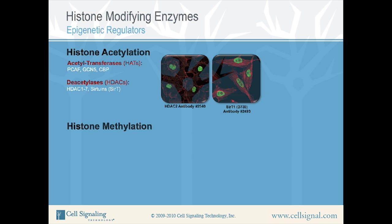Histone methylation is a major determinant for the formation of active and inactive regions of the genome, and is crucial for the proper programming of the genome during development. Methylation takes place on both lysine and arginine residues, and has been implicated in both transcriptional activation and silencing. This modification is carried out by lysine methyltransferases such as SET7 and 9, SUZ12, and SUV39H1, as well as arginine methyltransferases such as MEP50 and PRMT1, 4, and 5. Reversal of these modifications takes place through the action of demethylases such as Jumanji D1B, Jumanji D2A and B, and Jumanji D3.